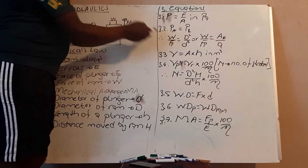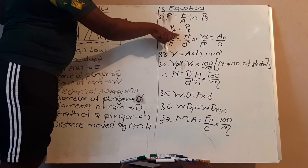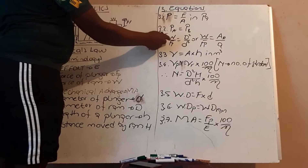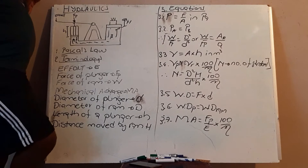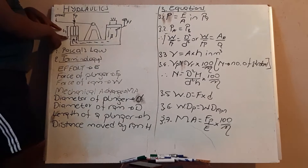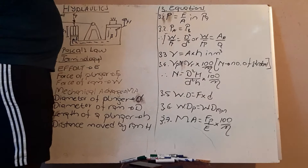This equation has been derived because you have force of plunger over area of plunger equals force of ram over area of ram. Put your forces on one side and your areas on another side, then pi/4 will cancel pi/4. If you are not given diameter but are given areas, instead of d-squared you put your area. This is the most important equation you must remember.